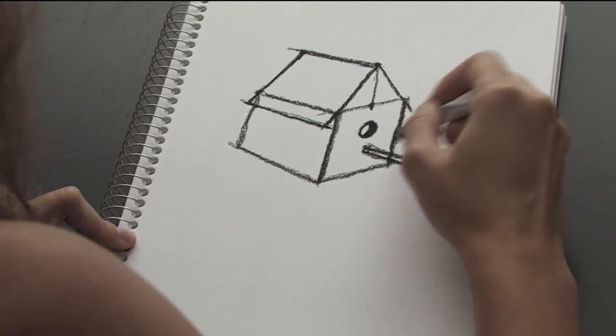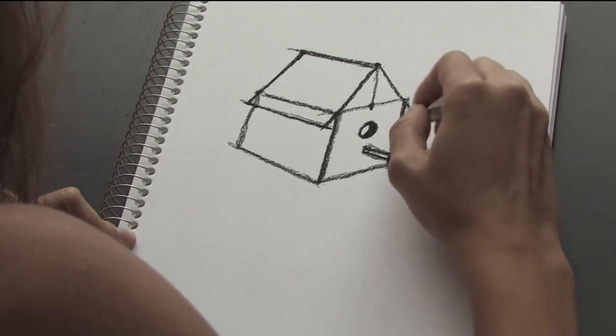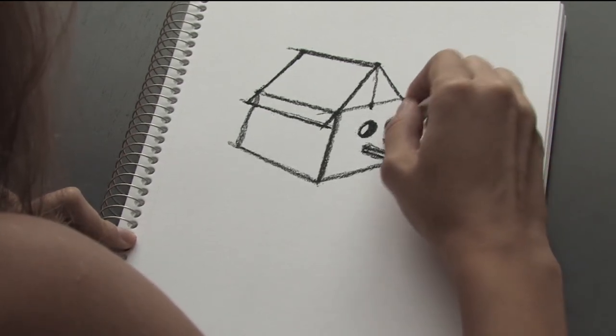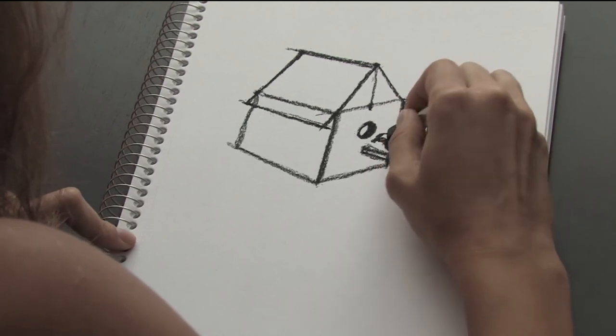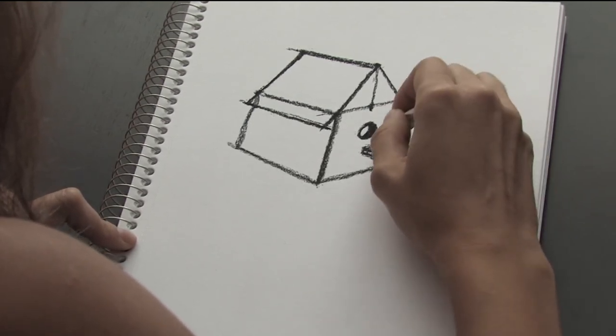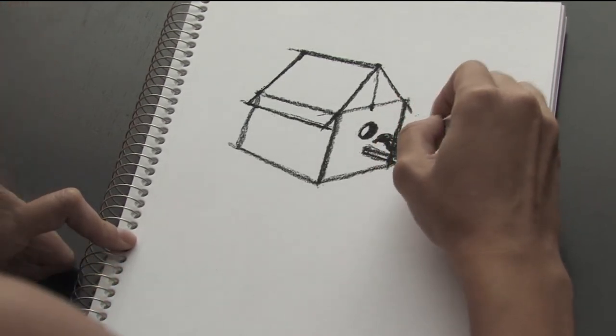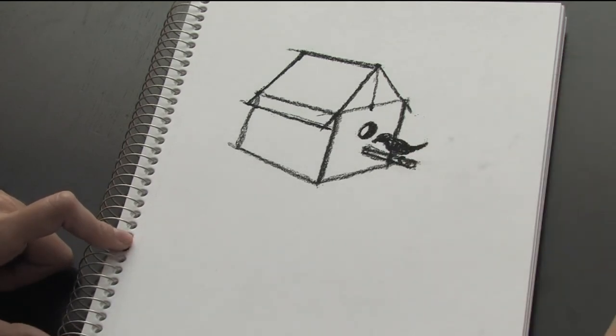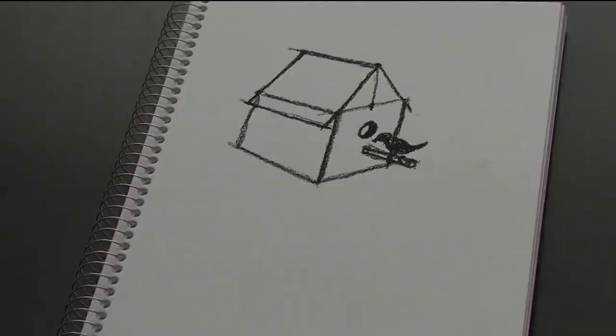So let's add some birds maybe. Something like this. And here is how you draw the birdhouse. This is Savadja Lame. Thank you for watching.